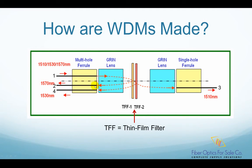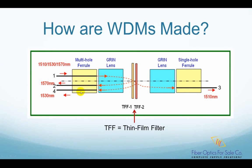So when the light hits filter one, 1570 nanometer is reflected and refocused into fiber two by the green lens. Now the light has 1530 nanometer and 1510 nanometer in it, and it keeps going until it hits filter two. Filter two is designed to pass 1510 nanometer but reflect 1530 nanometer. So 1510 nanometer light passes and is focused into fiber three by the second green lens. On the other hand, 1530 nanometer light is reflected by filter two, passes filter one again, and is focused into fiber four by the first green lens.